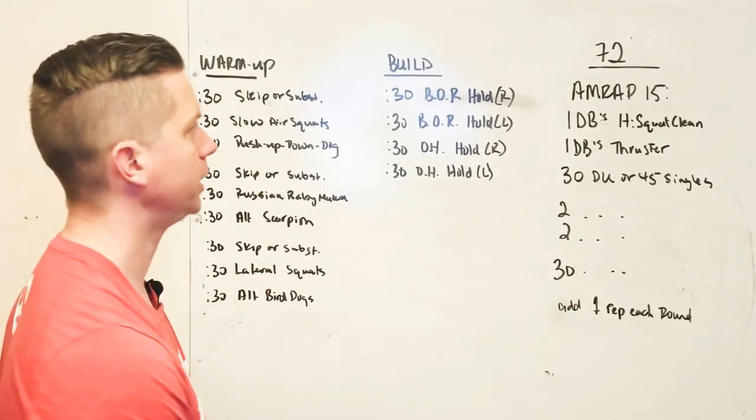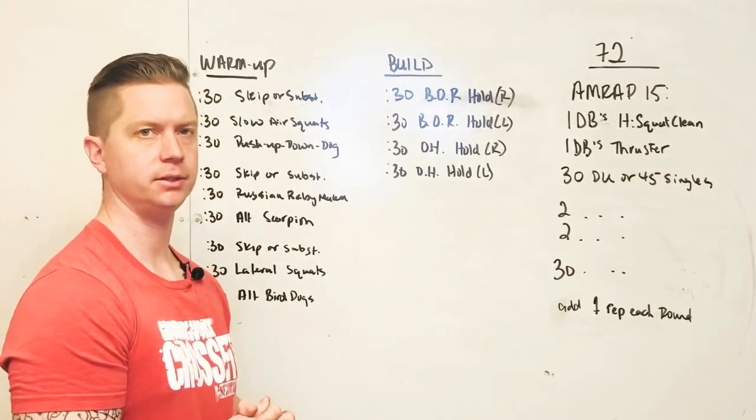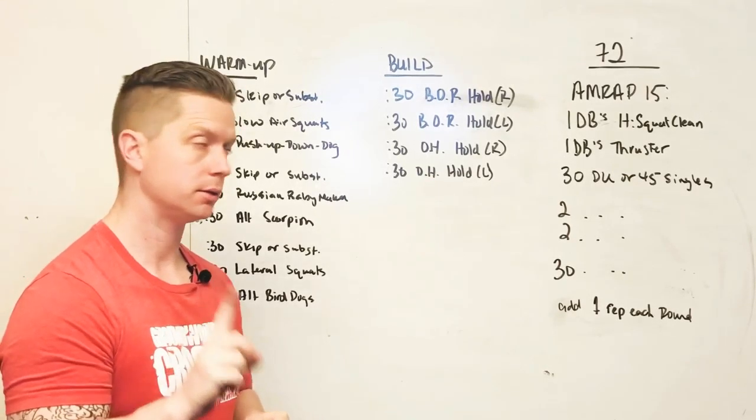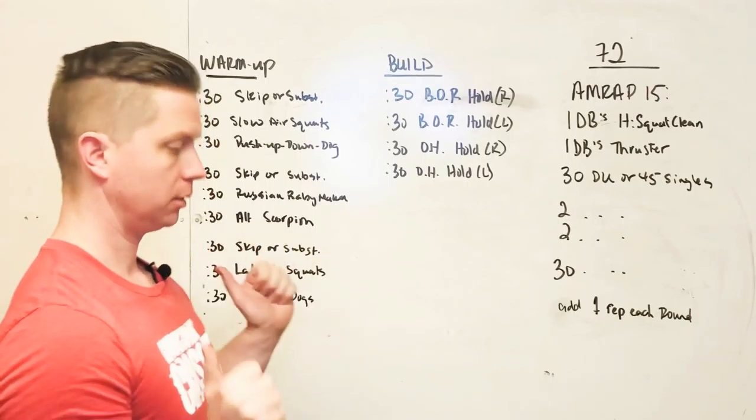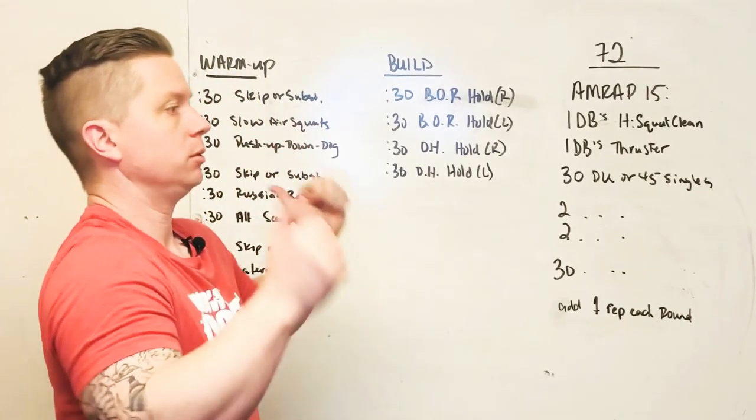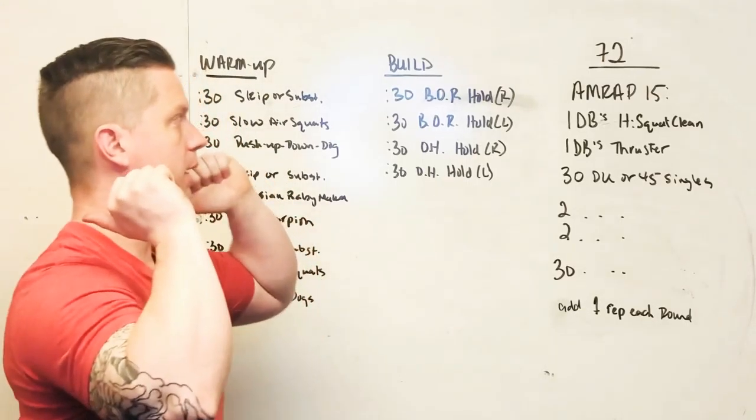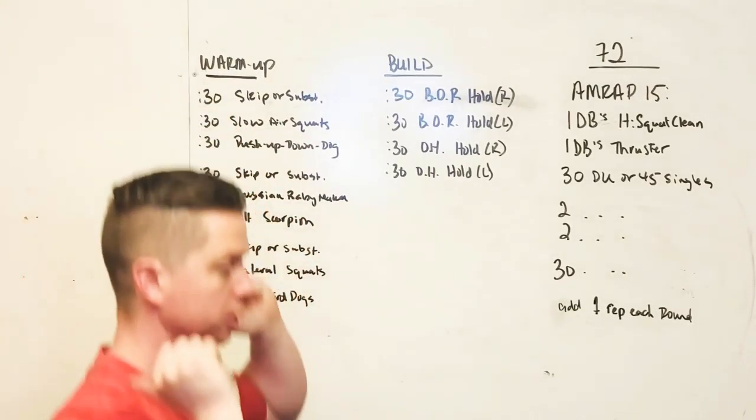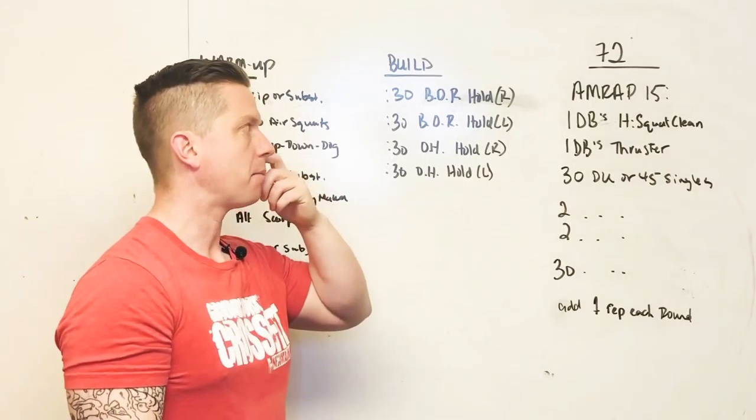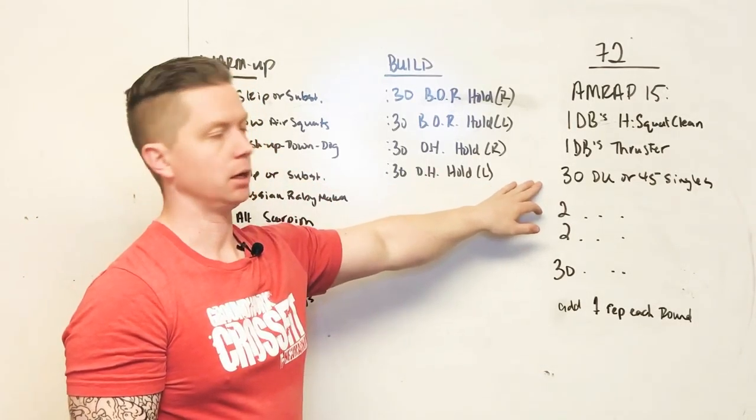Okay, we have Workout 72 today. It is an AMRAP for 15 minutes. We are starting with one dumbbell hang squat clean, so we're starting from the hang position, jump and come down, and then we stand. From there we do one thruster. So you have two squats every time. Then we do 30 double-unders or 45 singles.